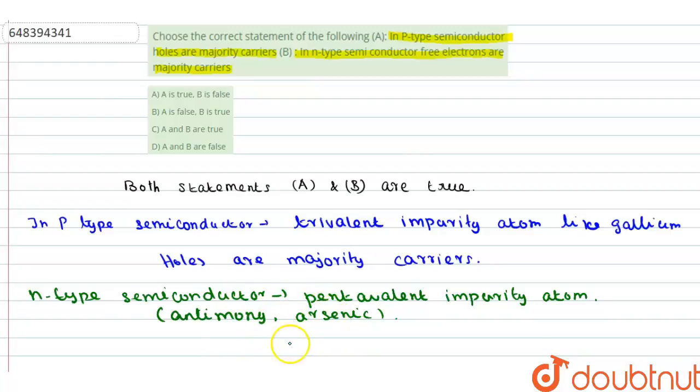In N-type semiconductor, electrons are majority carriers. So option C is correct. Both statement A and statement B are true.